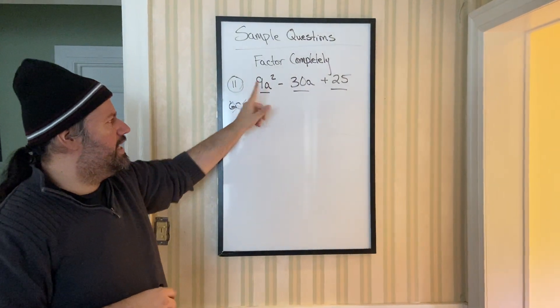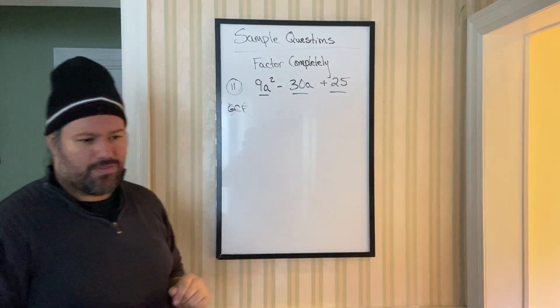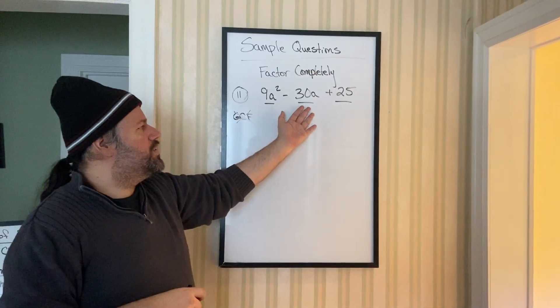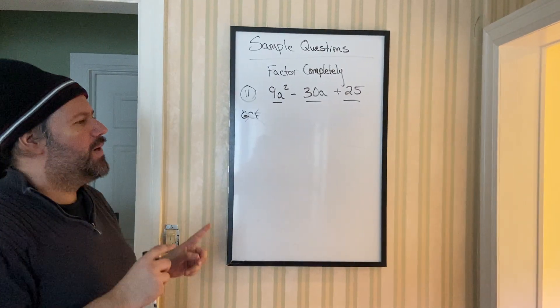9 would be 3 and 3. A squared is A and A. And 25 is a perfect square. 5 and 5. Then the book says you got to check the middle. And the middle is 2AB.